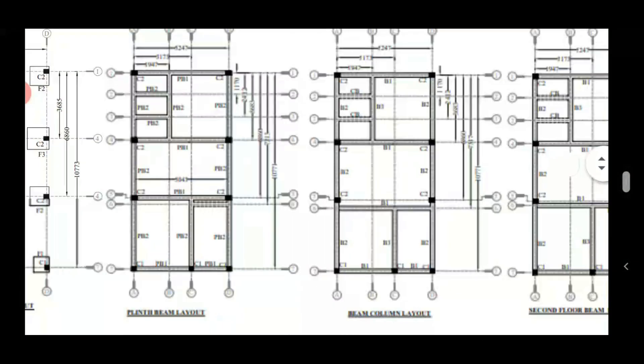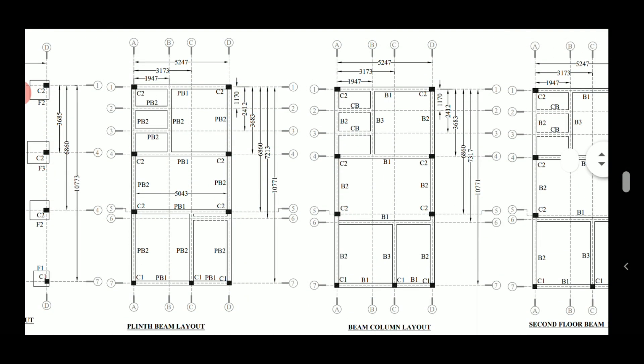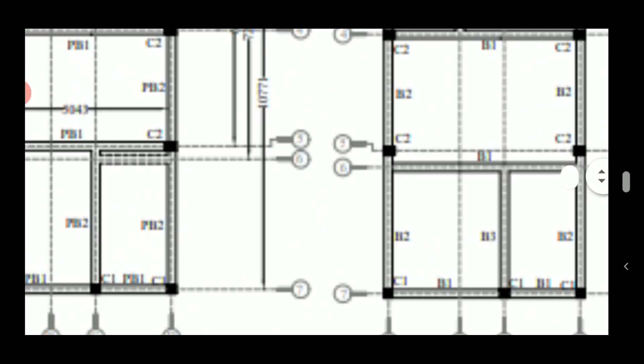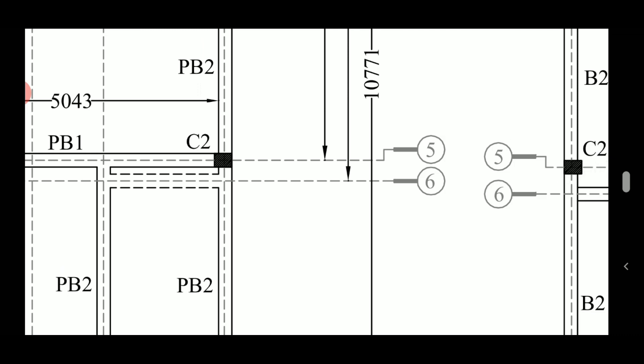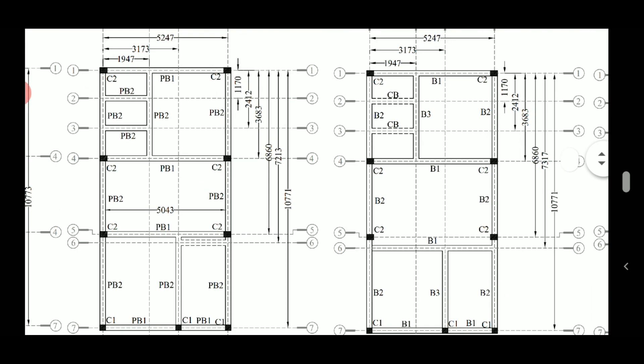Moving on, this is the plinth beam layout. In the plinth beam layout all beam marks are given, along with the center-to-center distances between different beams. There are two types of plinth beams: PV1 and PV2, and the column positions and column marks are also visible. One beam has been shown as dotted — we'll find out what that means in the plinth beam schedule.